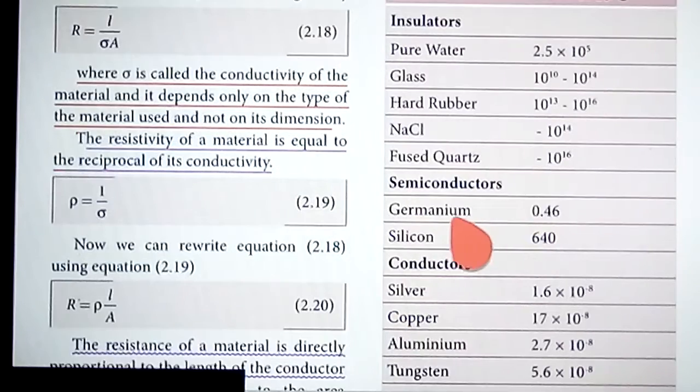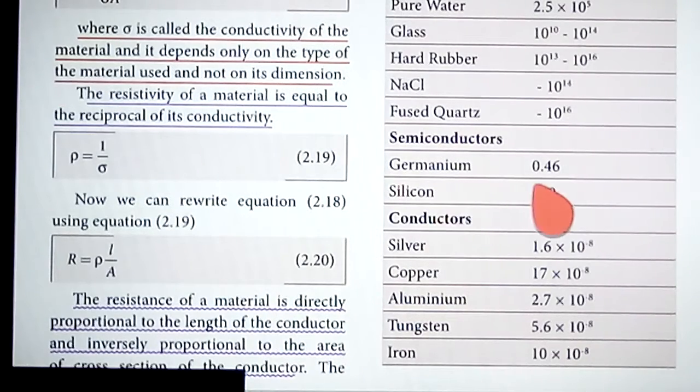For semiconductors like germanium and silicon, germanium is 0.46 ohm meter and silicon is 640 ohm meter.